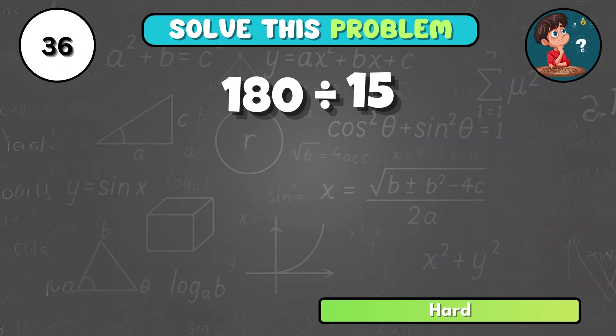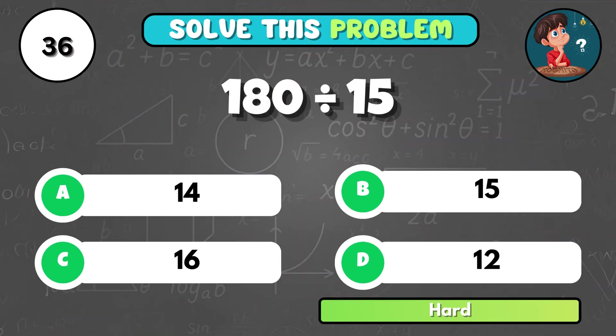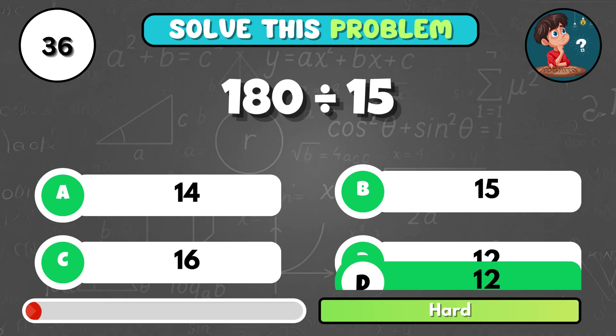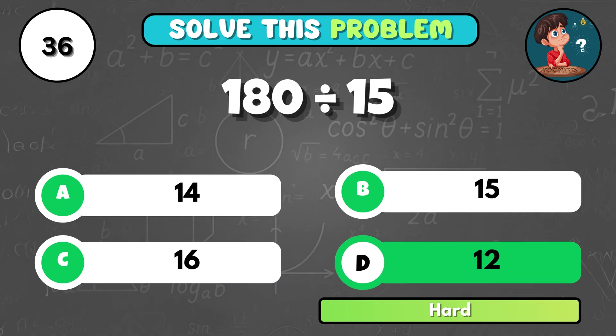If you divide 180 by 15, what do you get? That's D, 12.